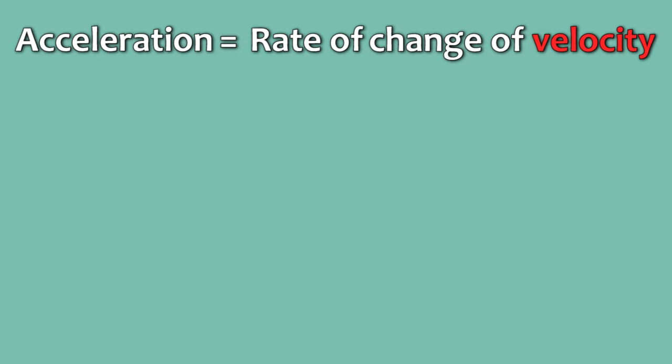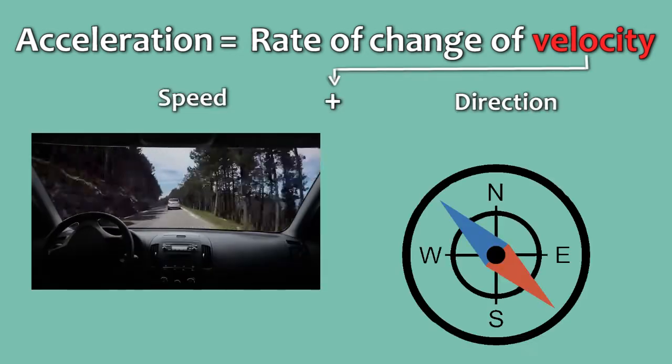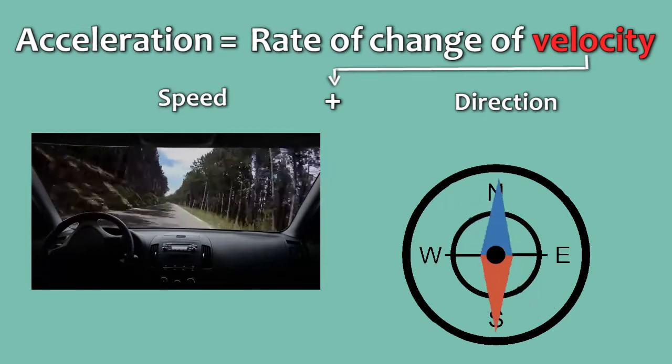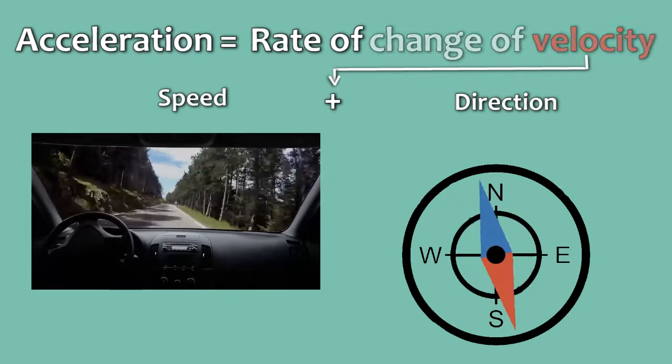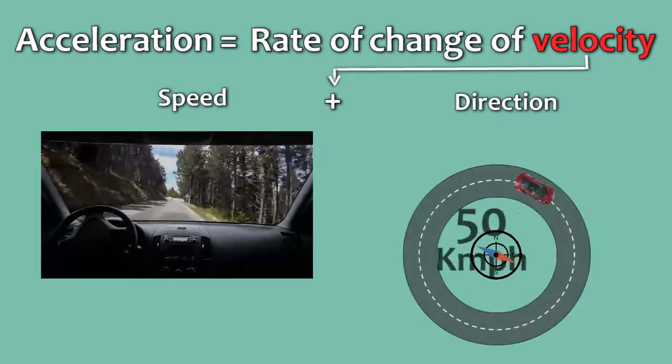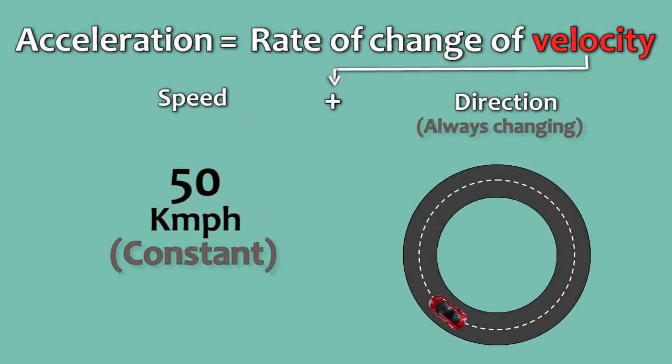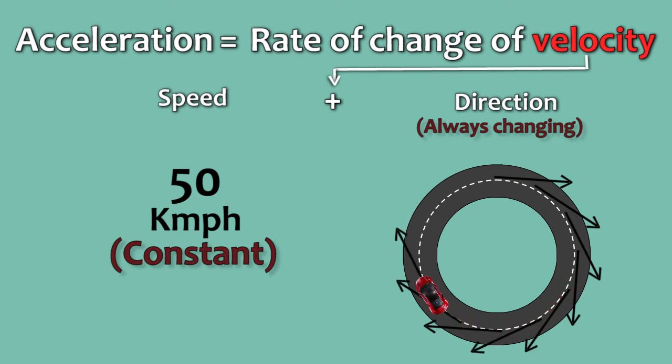In reality, acceleration is the rate of change of velocity. Velocity is speed coupled with the important factor of direction. Hence, if the direction changes, the velocity changes too. So, although the magnitude, which is speed here, remains the same, the direction changes constantly at every point along the circle, which in turn causes a change in velocity and leads to acceleration.